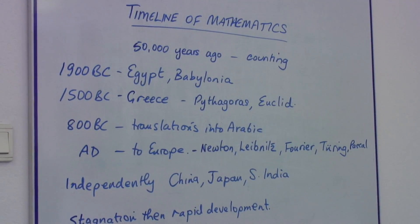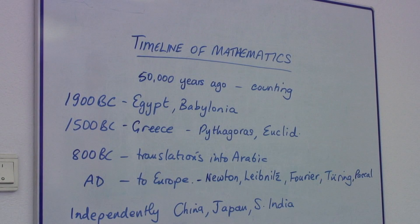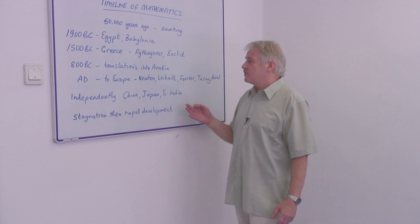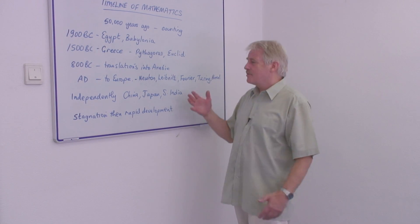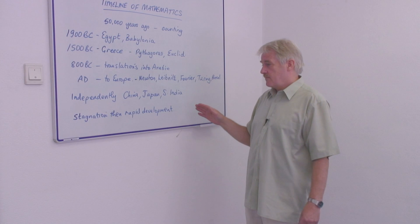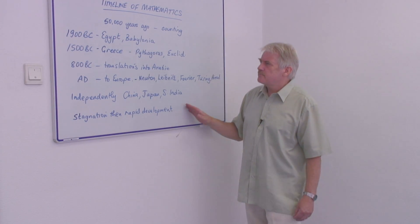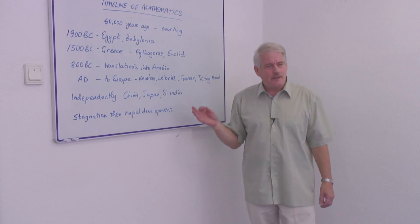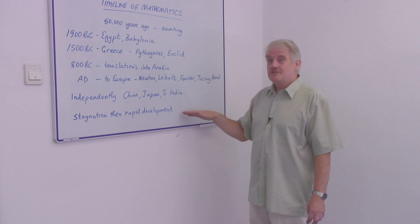So you will find that when Newton was developing all his theories, there were many mathematicians at the same time doing the same thing. So here we are, the timeline of mathematics. For 50,000 years, we've been using mathematics as a tool, not just for the last 10.